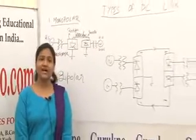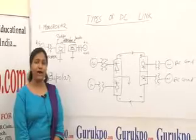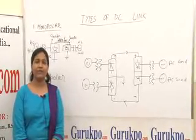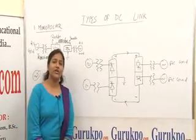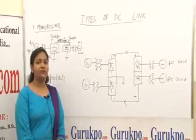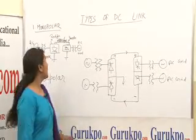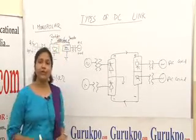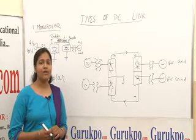Types of DC link are basically a part of high voltage DC transmission. In high voltage DC transmission, it is transmitted by three ways: by monopolar, bipolar, and homopolar.